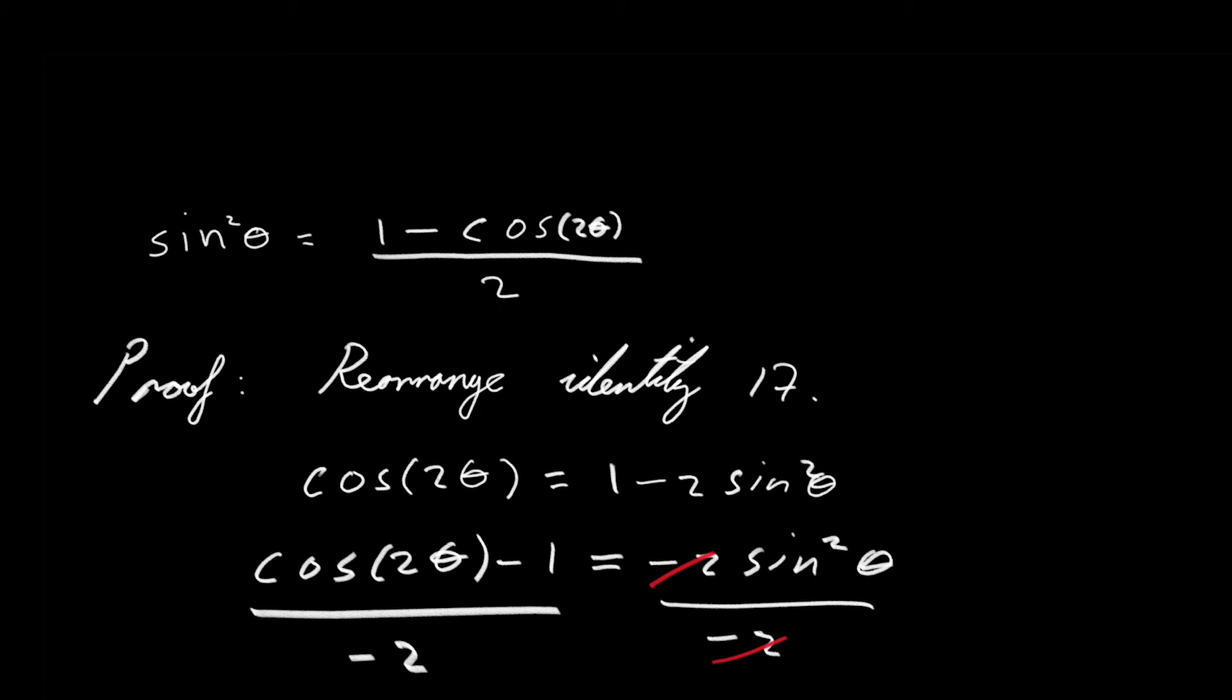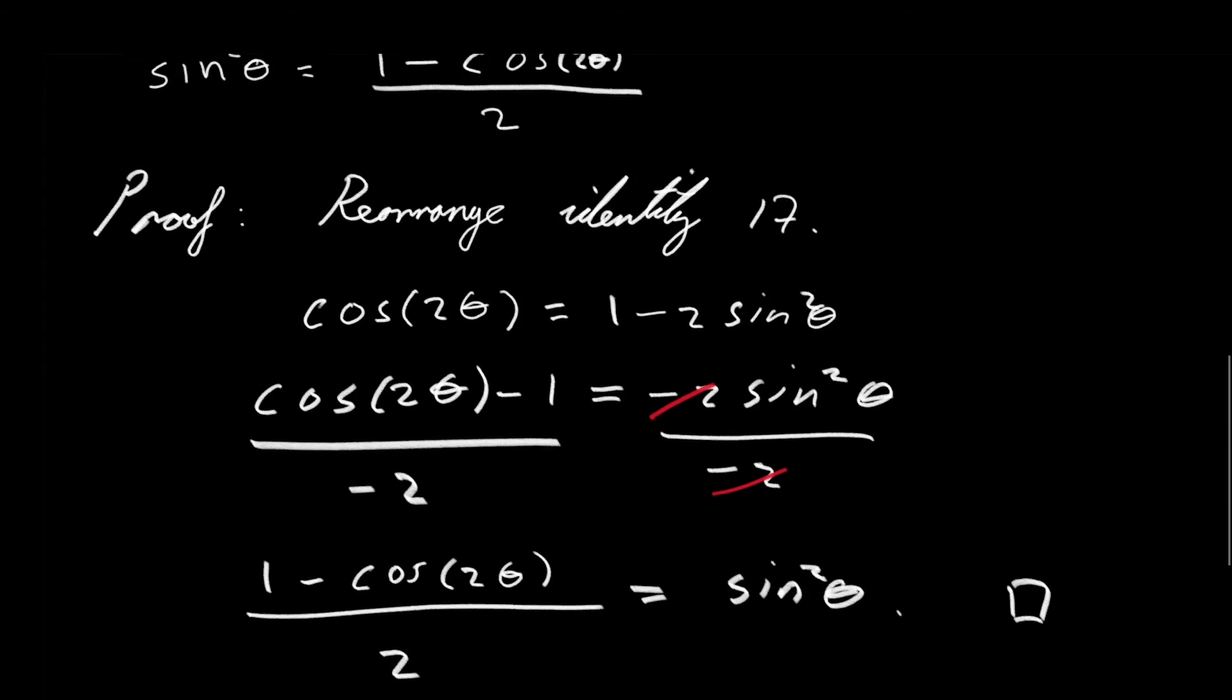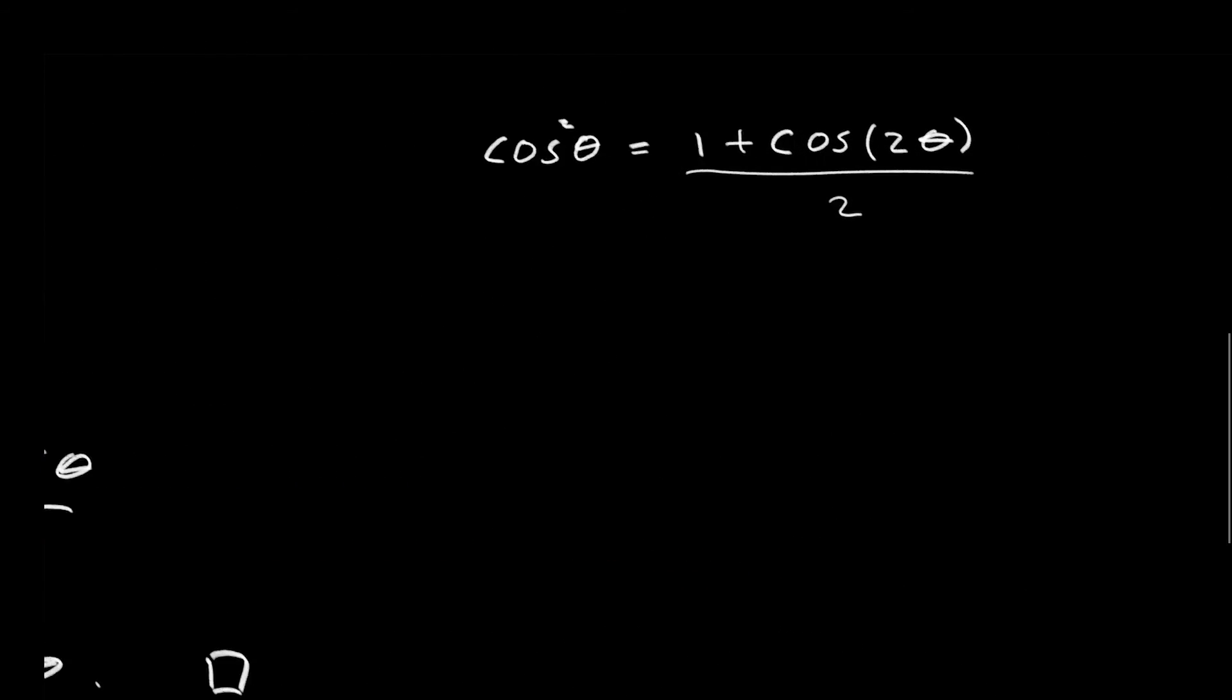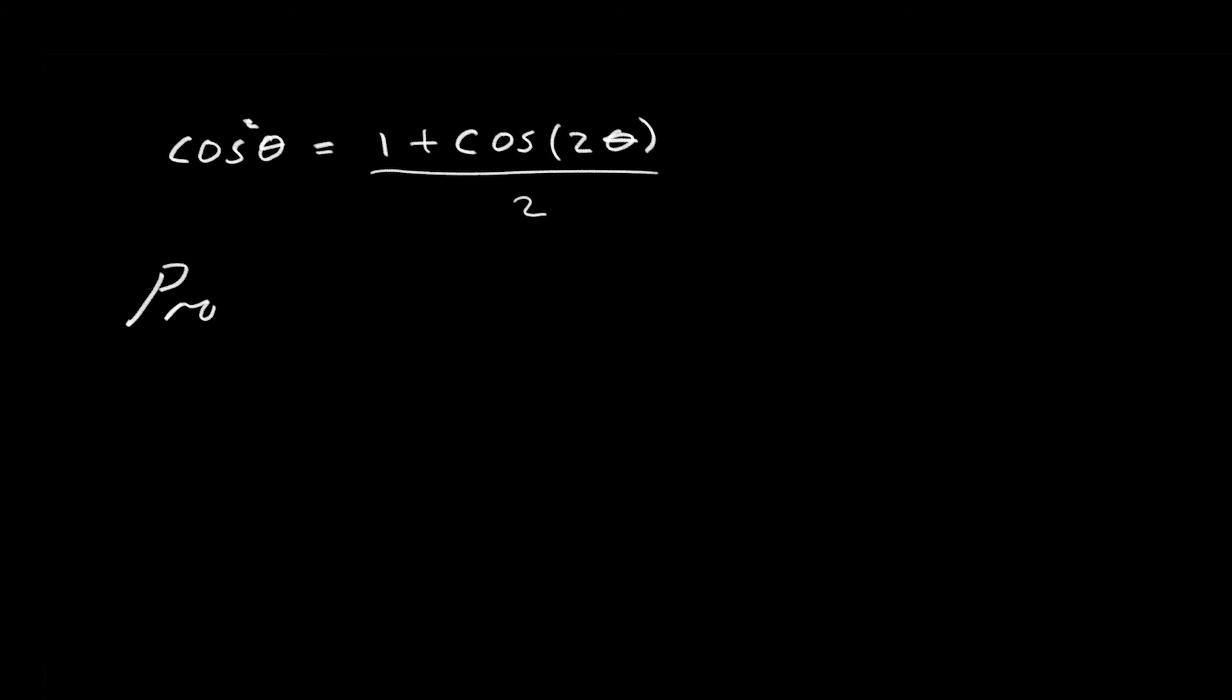This is the identity we're proving, and this is what we derived from rearranging trigonometric identity 17. Now let's go ahead and prove the last identity on our list. So this is trigonometric identity 19. Let's start the proof.